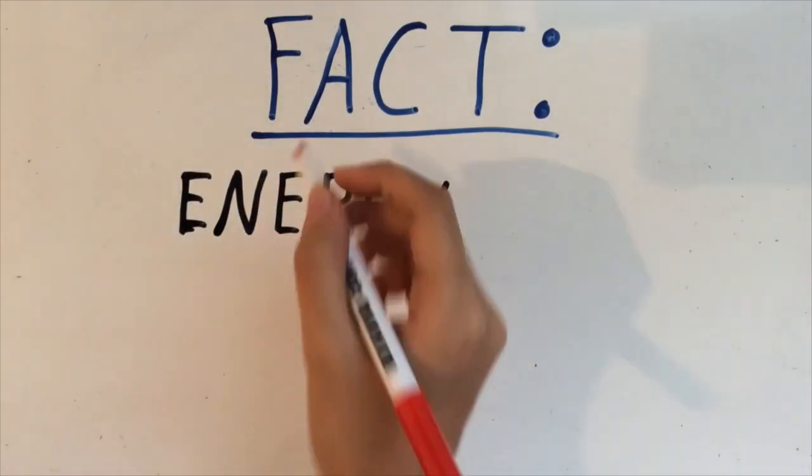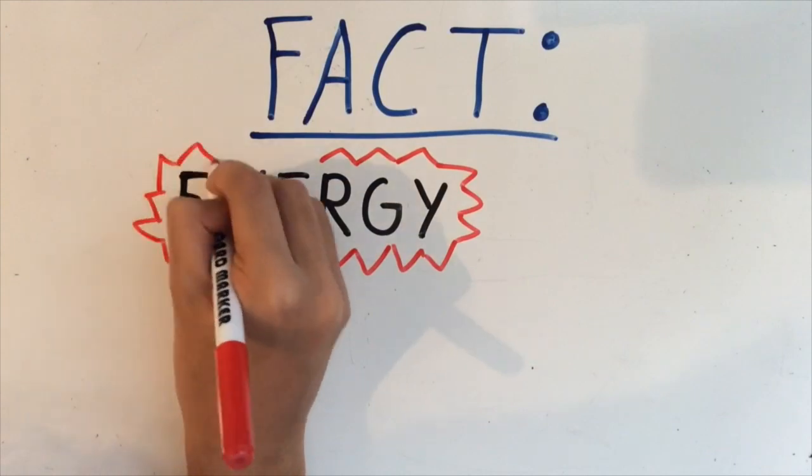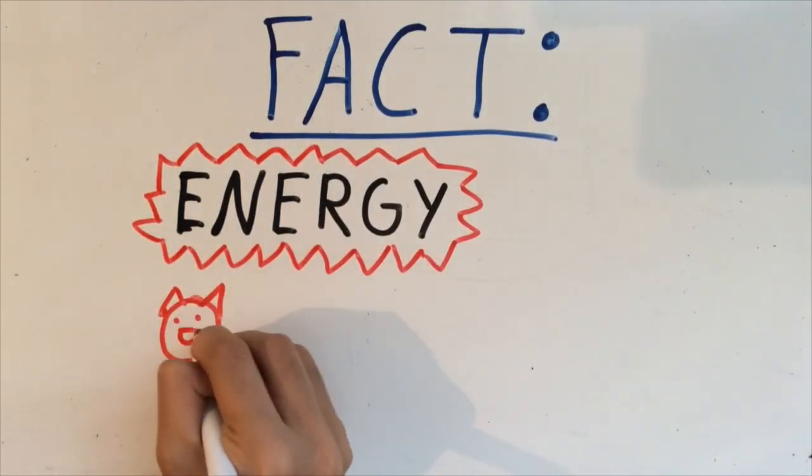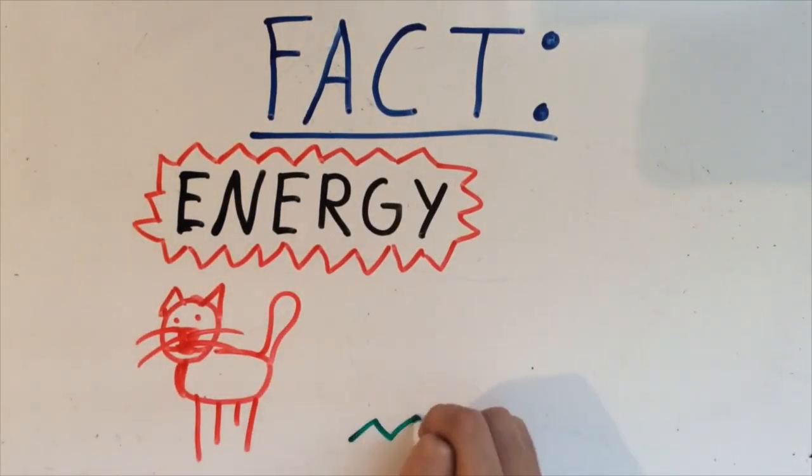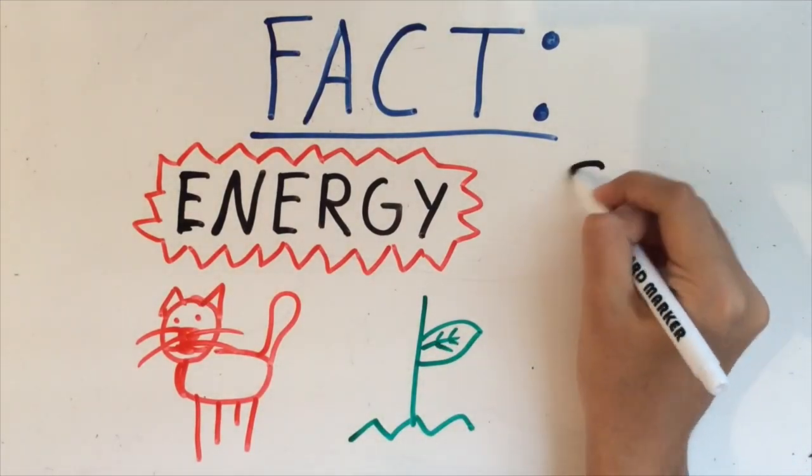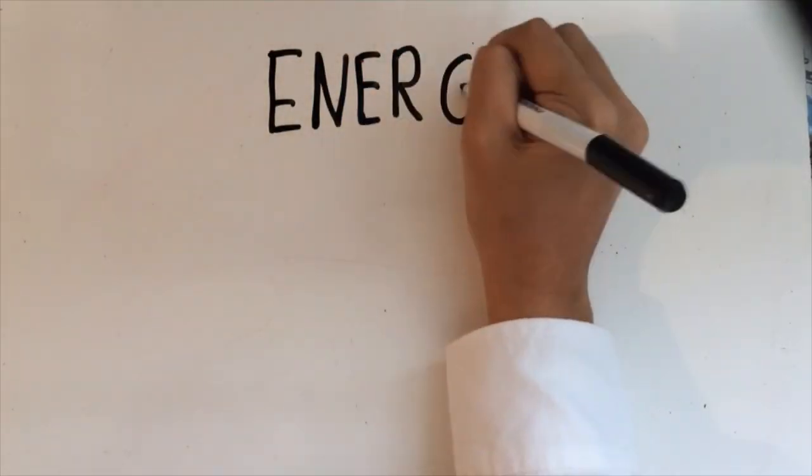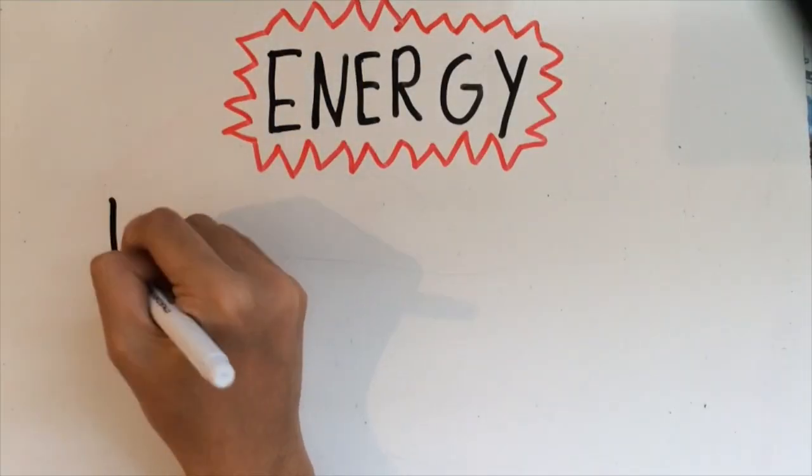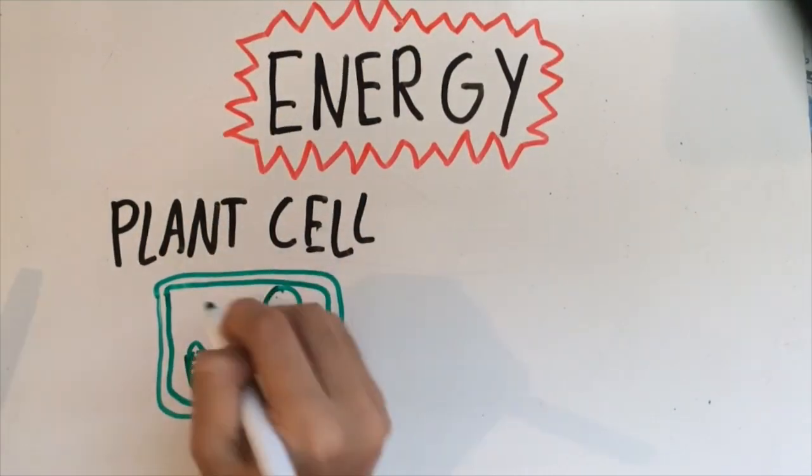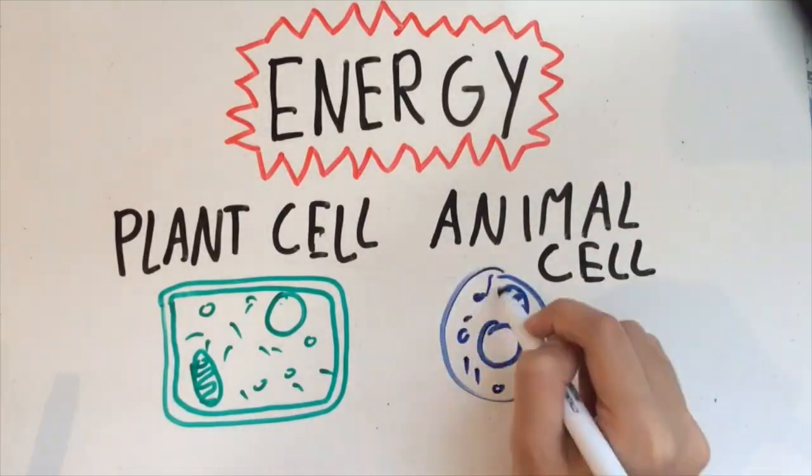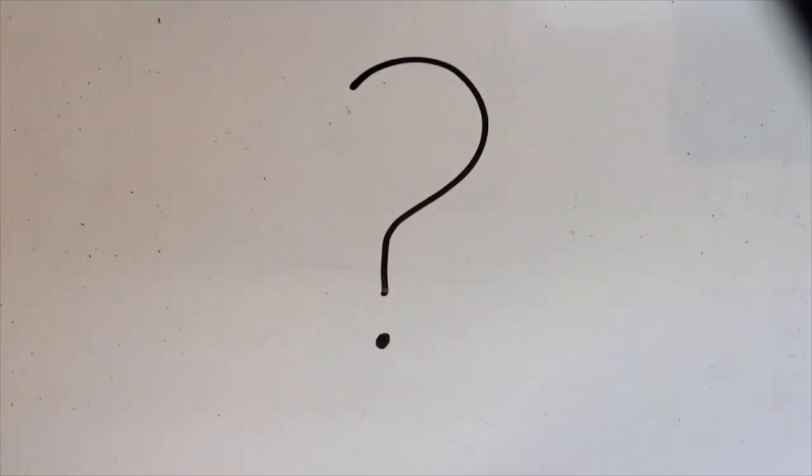Every living thing needs energy. Animals, plants, and even us humans. This is because cells in living things need energy to carry out their functions. So how do we get this energy?